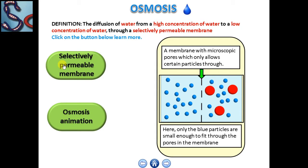In this figure you will see that this membrane allows only the blue particles but it will not allow the red particles, as the size of the pores inside the membrane is smaller than the size of the red particles. Due to this, it is called a selectively permeable membrane.